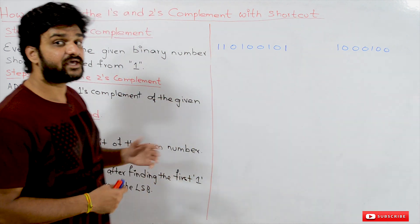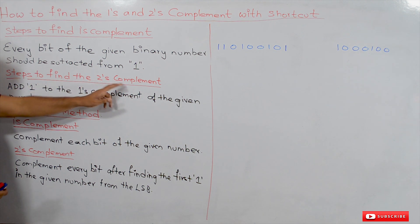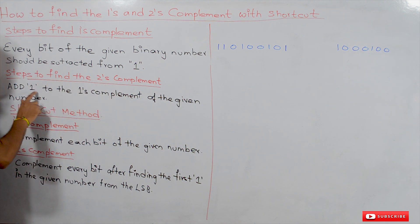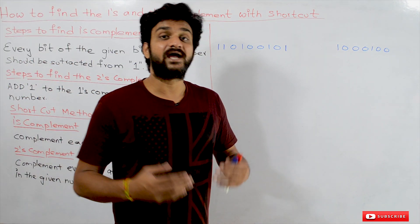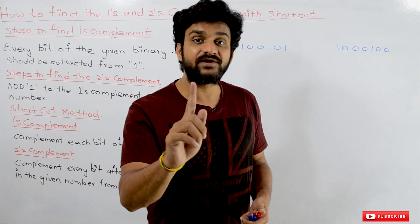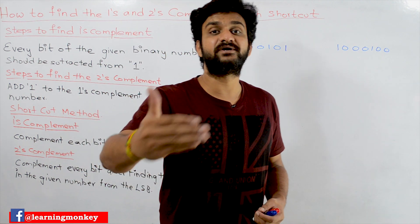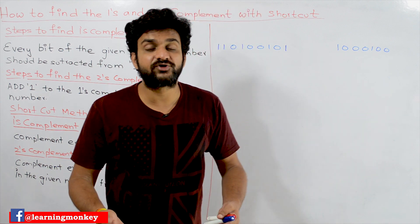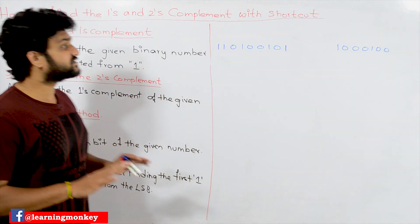Steps to find the twos complement: add one to the ones complement of the given number. First we find the ones complement, and then we add one to that result to get the twos complement.